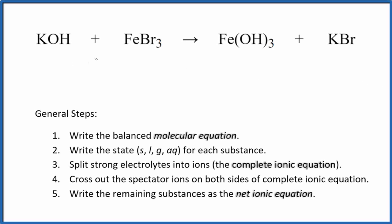Let's write the balanced net ionic equation for KOH plus FeBr3, potassium hydroxide plus iron three bromide. The first thing we need to do when we write these net ionic equations is balance the molecular equation.